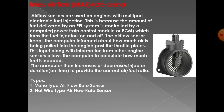First, we look at the mass air flow rate sensor. This sensor measures how much air should flow into the engine. It senses the rate of mass air flow and sends that information to the ECM. The ECM receives the air flow data and calculates the correct air-fuel ratio — determining how much fuel is needed in the carburetor. Air flow sensors are used on engines with multiport electronic fuel injection, because the fuel delivered by an EFI system is controlled by a computer — the powertrain control module or PCM — which turns the fuel injectors on and off.